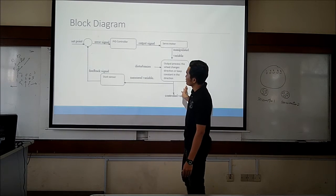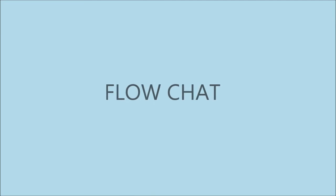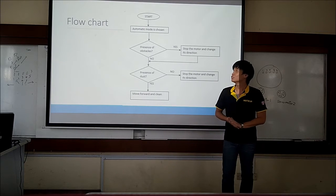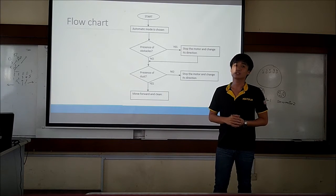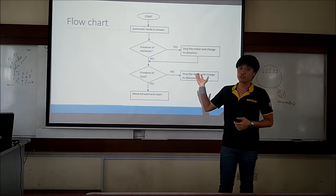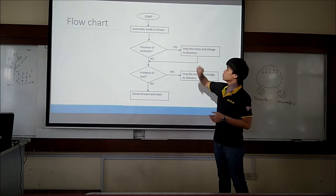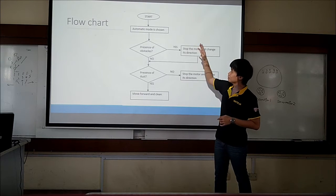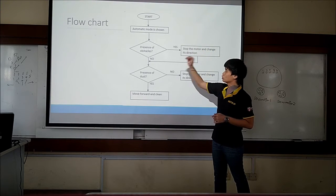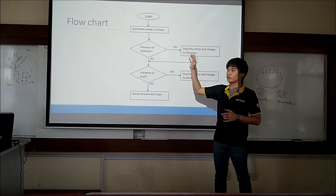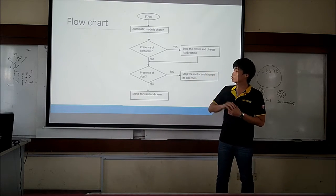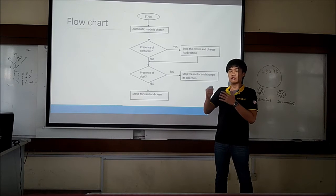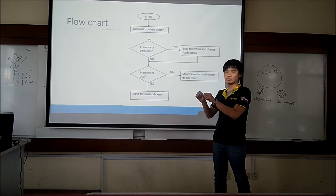That is about the block diagram. Now I'm going to explain about the operation of the houseclean robot in our project. This is the flowchart of the robot. Initially, we can choose the mode — either manual switch or auto switch. Now we choose auto switch. Then the robot will proceed to detect whether there is a presence of obstacles in front of the robot. If there is an obstacle, the robot will stop and change direction according to the input command from the user.